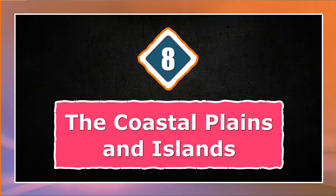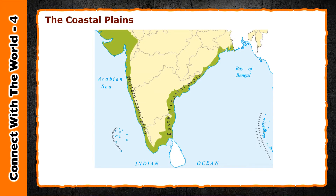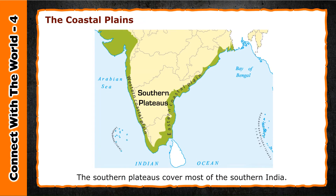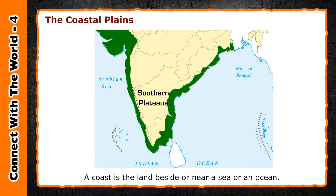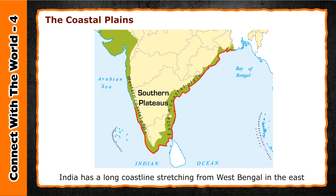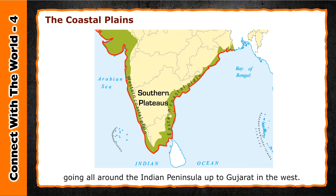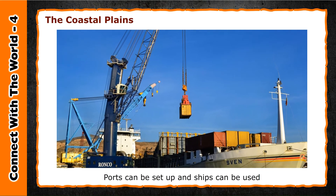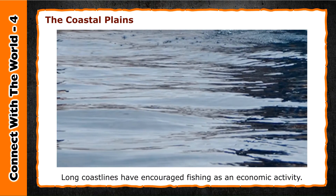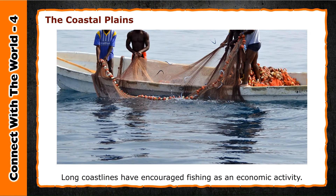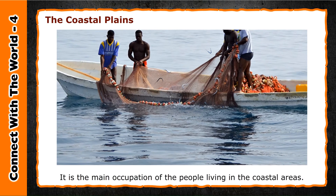The coastal plains and islands. The southern plateaus cover most of southern India and are bordered by narrow coastal plains on the eastern and western sides. A coast is the land beside or near a sea or ocean. India has a long coastline stretching from West Bengal in the east, going all around the Indian Peninsula up to Gujarat in the west. The main advantages of a long coastline are that ports can be set up and ships can be used to transport large quantities of goods within and outside the country. Long coastlines have also encouraged fishing as an economic activity, which is the main occupation of people living in coastal areas.